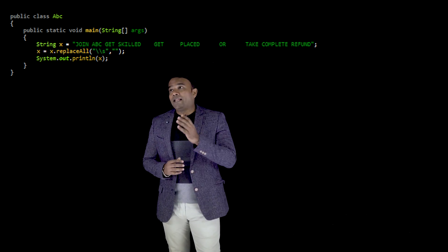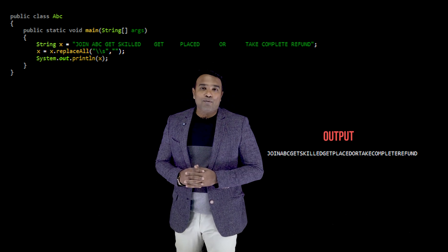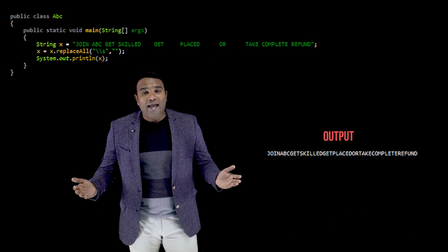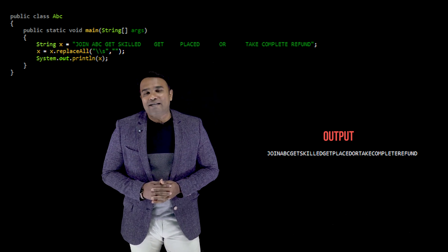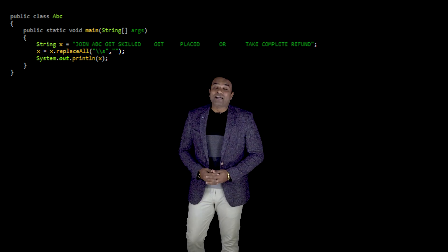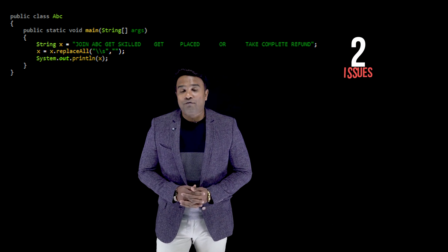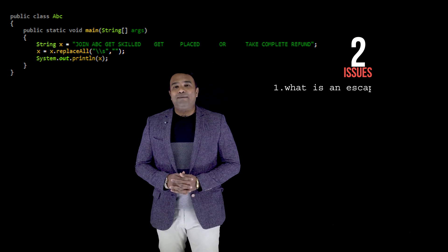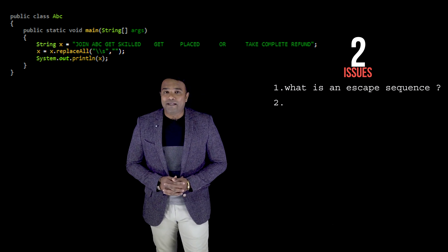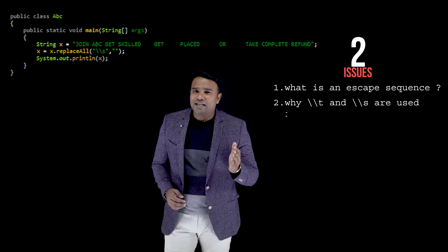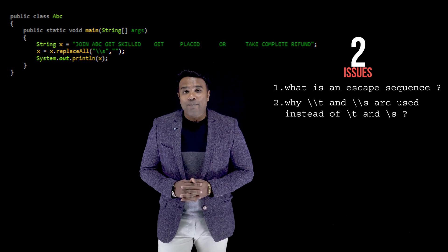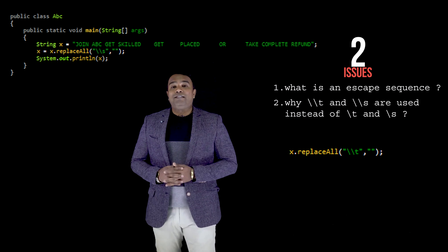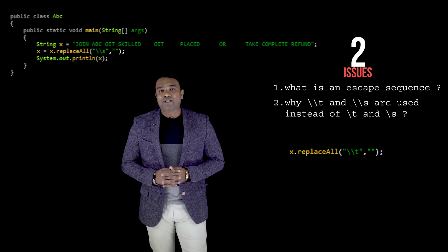When I execute it, the output is as per my expected results. You may still have two questions: firstly, what is an escape sequence, and secondly, if \t and \s are escape sequences, then why within the replaceAll method have I made use of double \t and double \s?